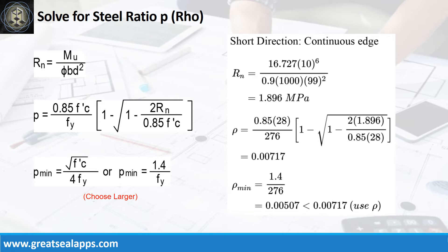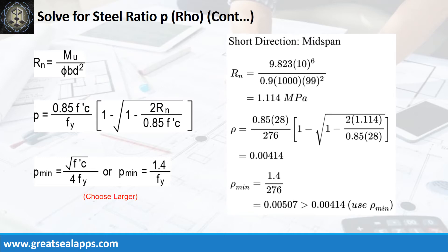Given short direction, continuous edge moment is 16.727 kN/m. Resistance factor equals 0.9, b equals 1000 mm, and d equals 99 mm. The beam design ratio RN equals 1.896 MPa, and reinforcement ratio rho equals 0.00717. Given short direction mid-span moment equals 9.823 kN/m. Resistance factor equals 0.9, b equals 1000 mm, and d equals 99 mm. The beam design ratio RN equals 1.114 MPa, and reinforcement ratio rho equals 0.00414; use rho minimum of 0.00507.